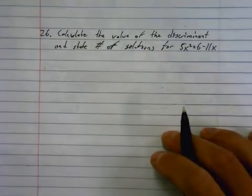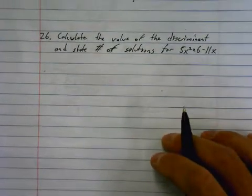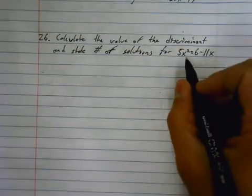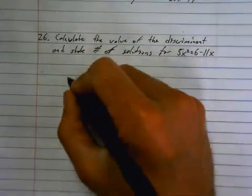All right, calculate the value of the discriminant and state the number of solutions for this. Okay, first of all, in order to get the discriminant or the quadratic formula, I'm going to set this equal to zero.